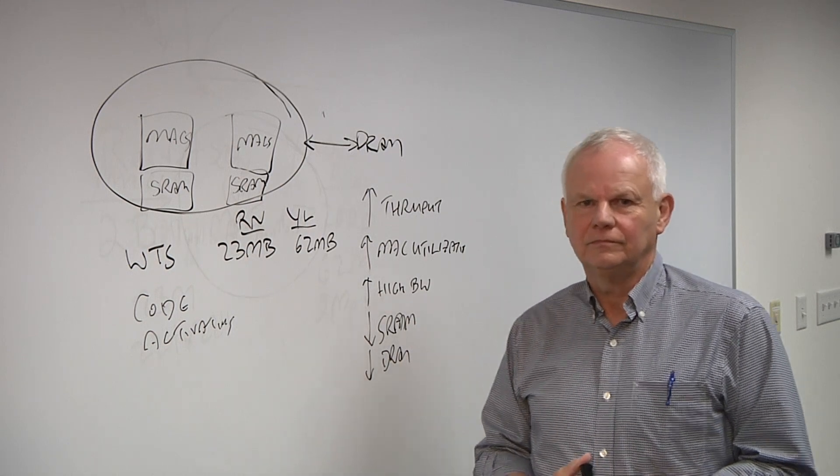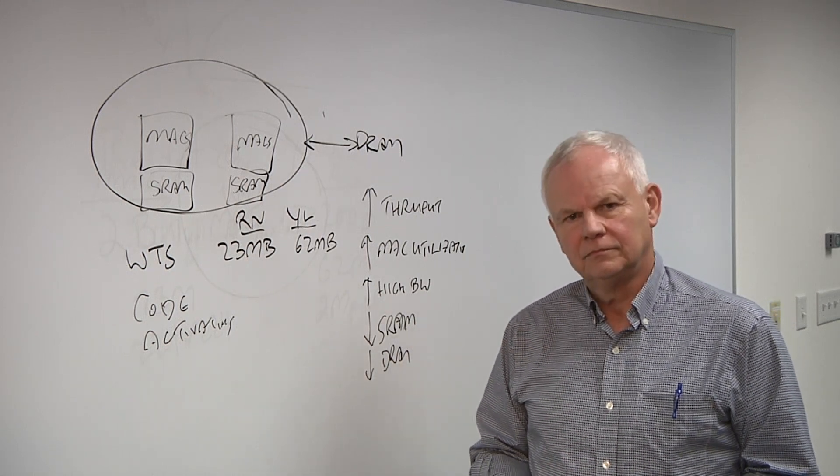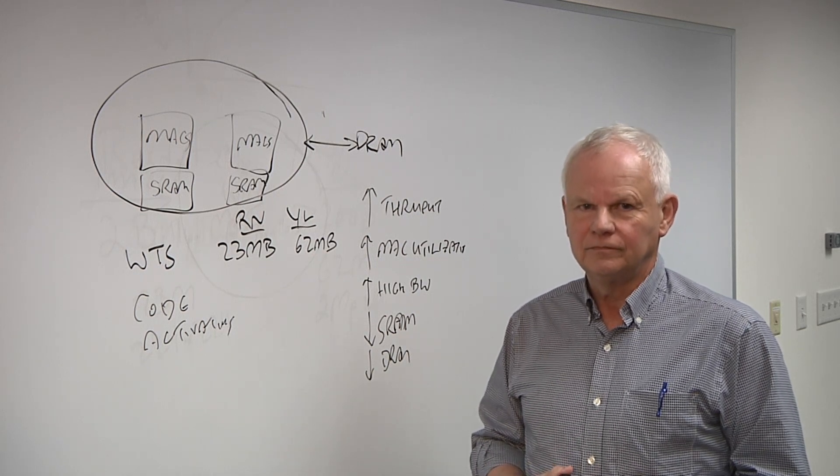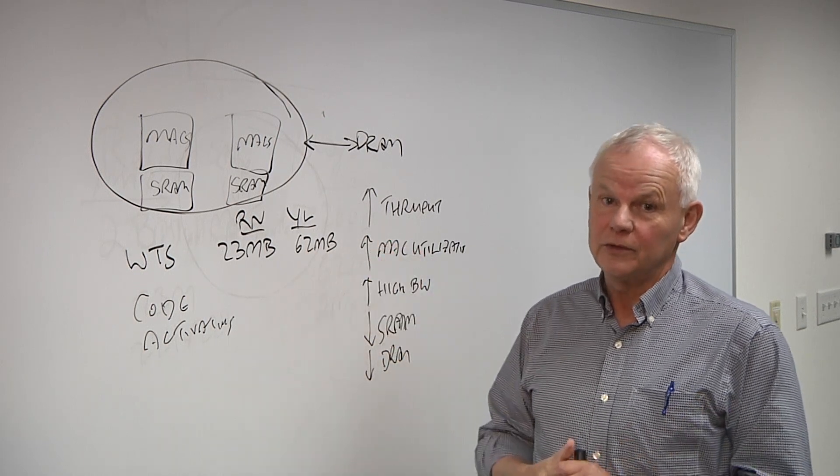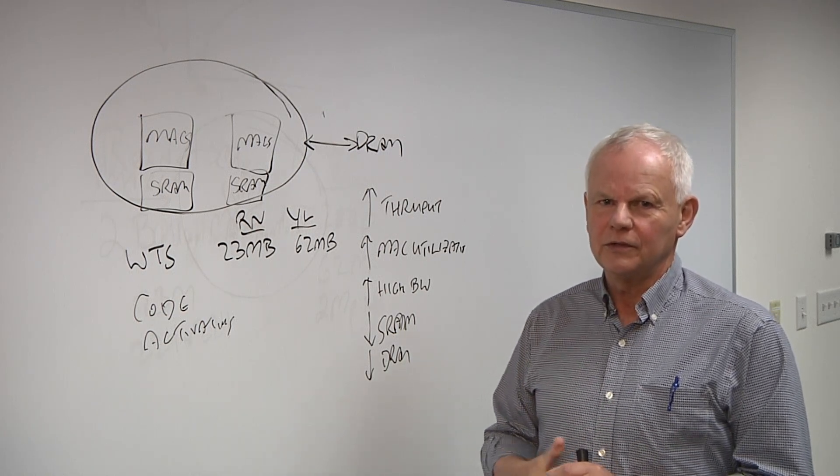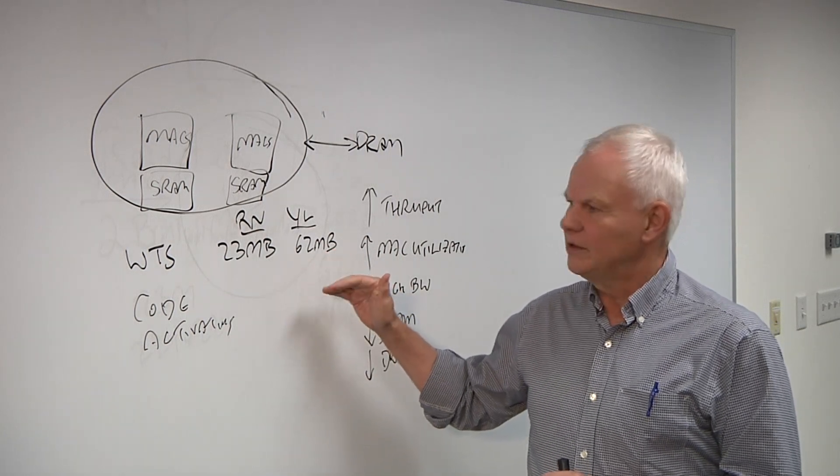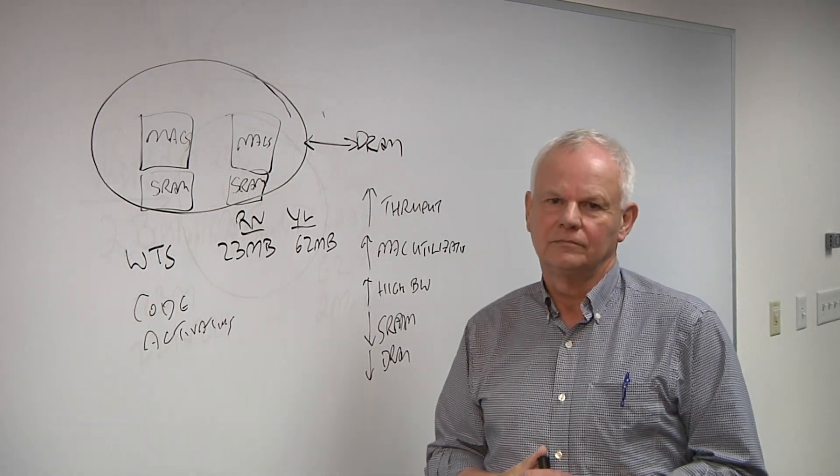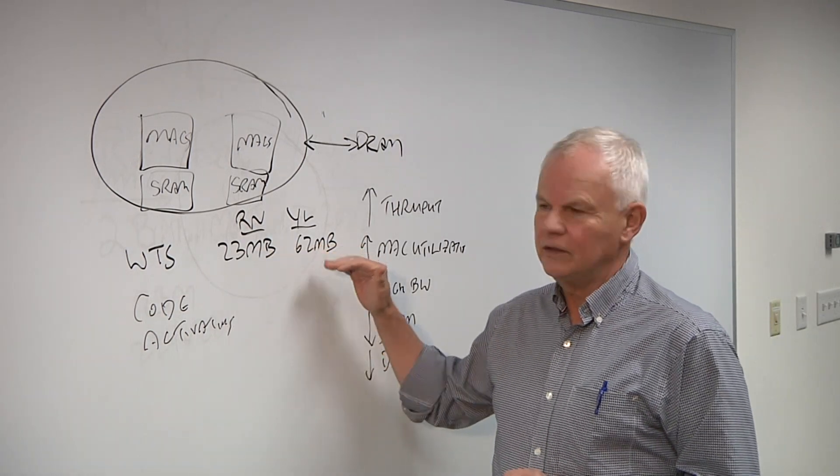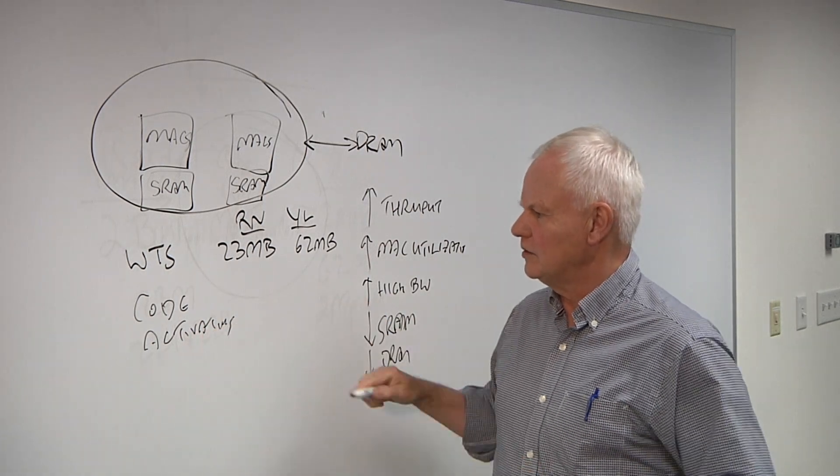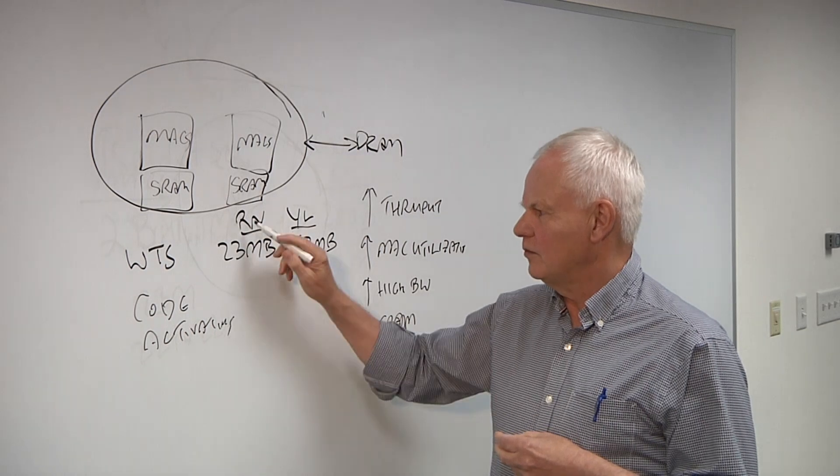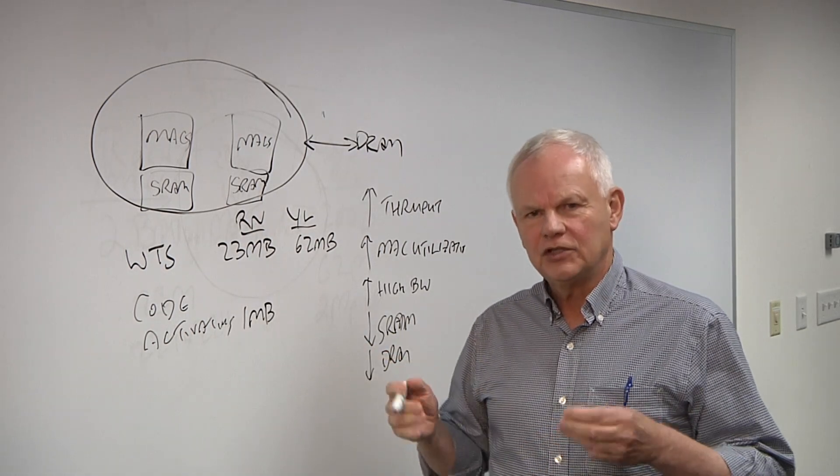When you're looking at these SRAMs that are on the chip, these are very small SRAMs, right? Because SRAM tends to be very big and also very expensive. Each megabyte of SRAM on a 16-nanometer process is about one square millimeter. So if you need to store 62 megabytes of weights, there are 62 square millimeters right away. If you're trying to do a double-digit price chip, you better be well under 100 square millimeters. So storing just this is a problem. This without getting to the code and the activations.